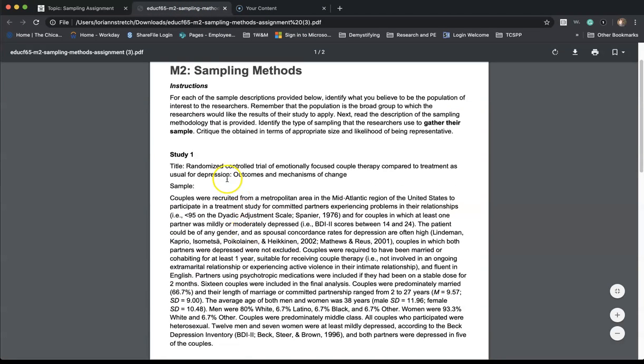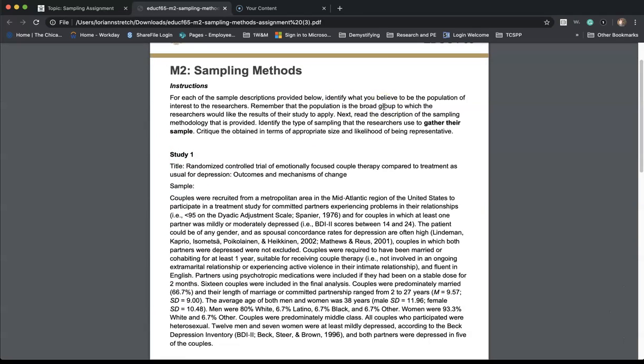And for the assignment, you will need to use these two studies, and you will need to identify the population to whom the researchers were trying to generalize. You'll also need to identify how they got their sample, which is called sampling, what type of sampling was used, and then did they get an appropriate sample size.